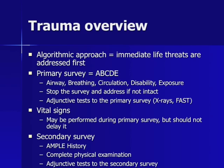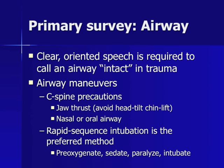Looking at the specifics of the primary survey, we first discuss the airway. Clear, oriented speech is required to call an airway intact in trauma. In blunt trauma patients, adequate C-spine precautions must always be performed, including the jaw thrust rather than the head tilt-chin lift maneuver, as this could further injure an unstable C-spine.